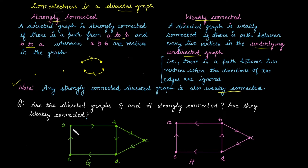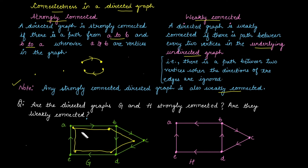Let's try to find a circuit that covers each vertex using the directions. Starting from vertex A, we move to B, then B to C, then C to D, then D to E, then E back to A. With the help of directions, we have found a circuit that covers each and every vertex. This means the graph is definitely strongly connected — you can start from any vertex and reach any other vertex.